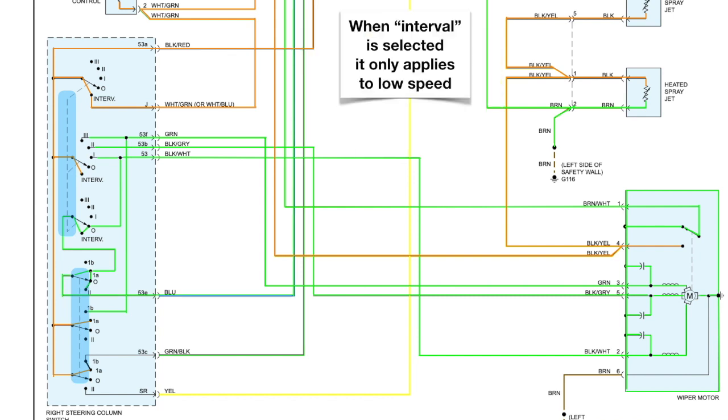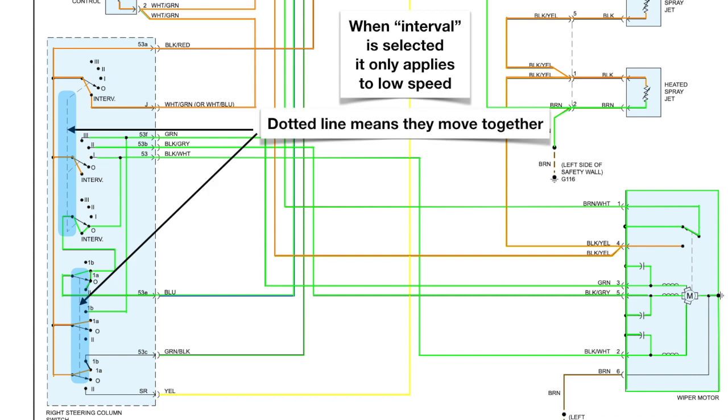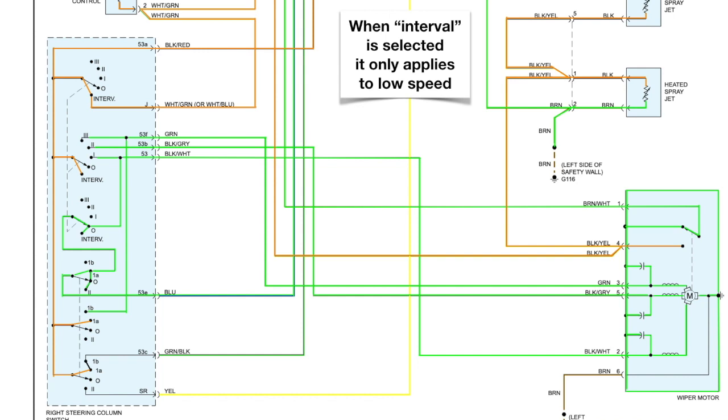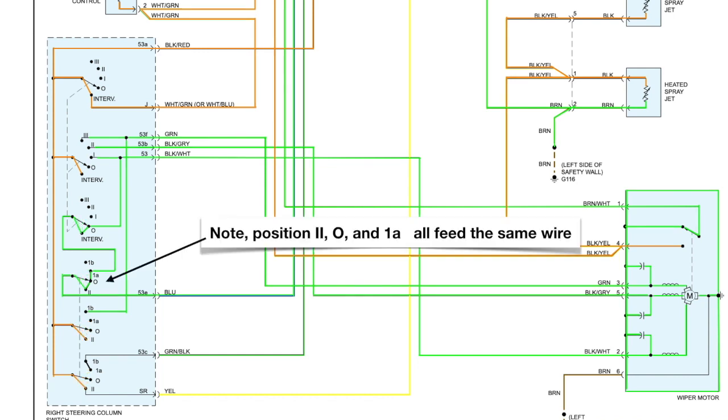These dotted lines mean that all these switches move together. When we select interval, it only applies to the low speed. Note position 2, 0 for off, and 1A, they all feed the same wire.